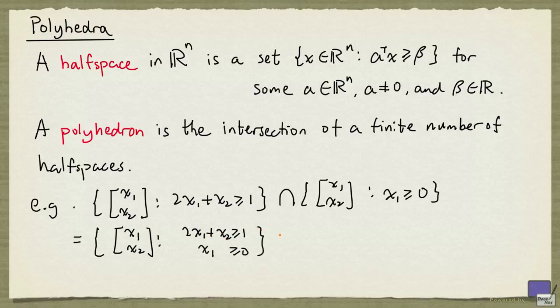And from this we can see that the feasible region of a linear programming problem is a polyhedron. The word polyhedra is the plural for polyhedron.